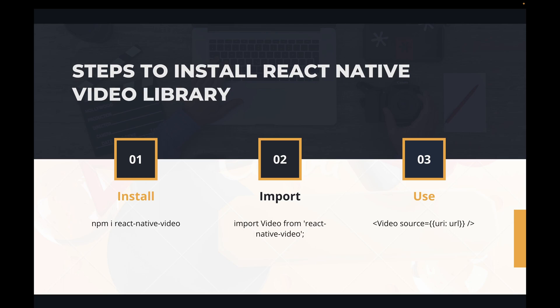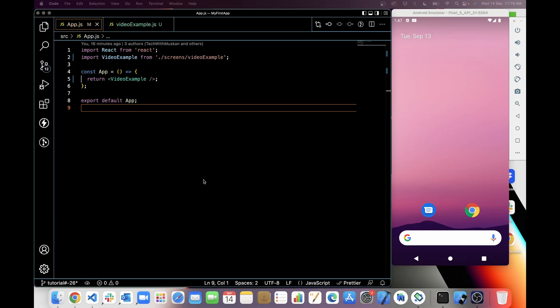At the very first step, we have to install react-native-video with the npm package. Then in the next step, we will import this video library in the component where we have to use it. Then we will use Video as a component and add a source file. If you are using a URL, you have to use the URI key, and if you are using a local file, you can simply add your local file in source.